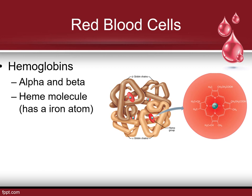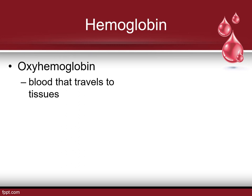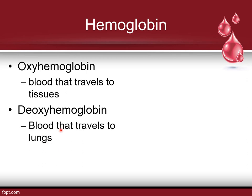Red blood cells have hemoglobin on them — both alpha and beta heme molecules, which contain an iron atom. They're iron-rich, which is part of how they get their reddish color. The oxygen from our lungs actually attaches to this heme molecule, adding oxygen to the red blood cells. Hemoglobin with oxygen is referred to as oxyhemoglobin — the blood traveling to the tissues. Hemoglobin can lose its oxygen to become deoxyhemoglobin, which is blood traveling to the lungs to get oxygenated and then become oxyhemoglobin again to go back out to the tissues.